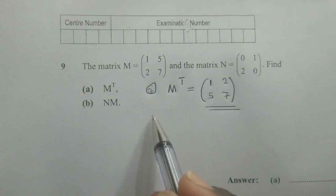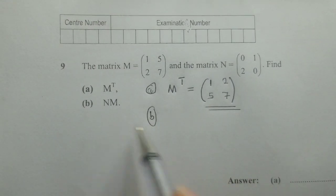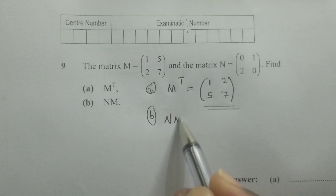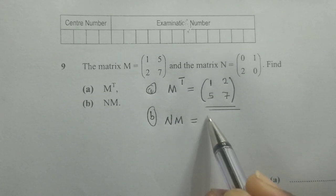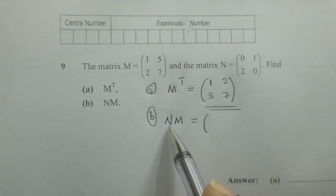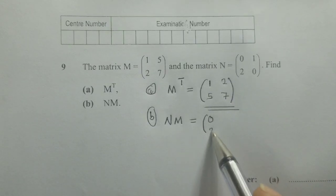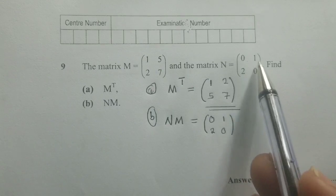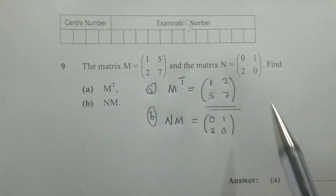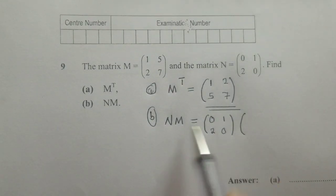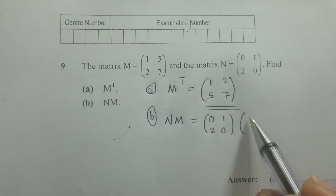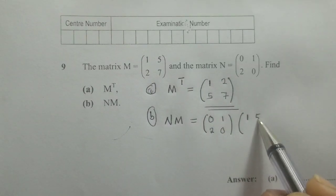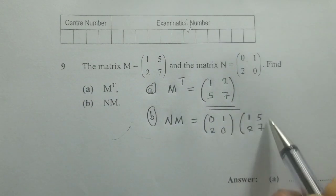For question B, we are multiplying. So it's NM. What we're going to do here is to get matrix N, which is 0, 1, 2, 0. And then here we get matrix M, which is 1, 5, 2, 7, like this.